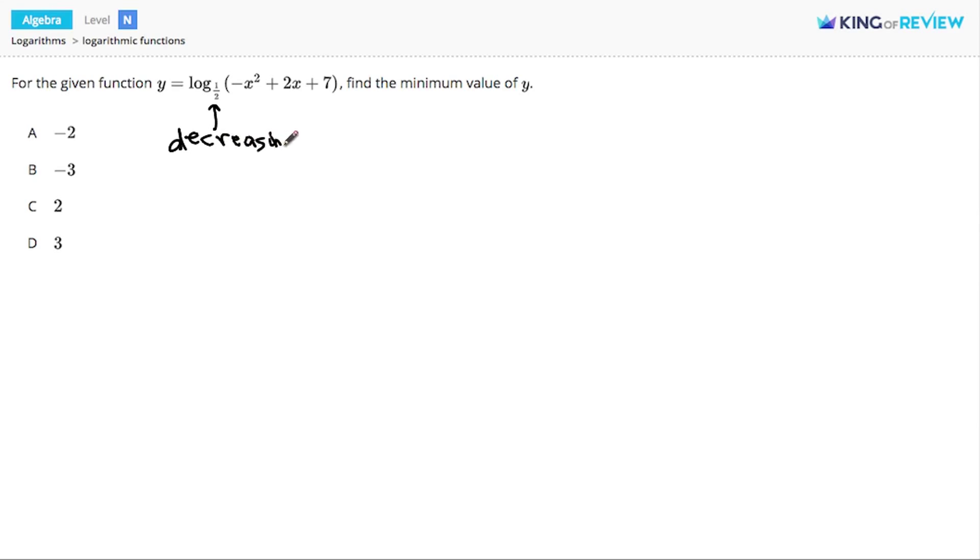the function will be a decreasing function, meaning as the expression inside the log gets bigger, the value of y, the log, gets smaller. So if we want the minimum, the lowest value of y, it follows that we need to find the maximum, the highest value, of the expression inside the log.